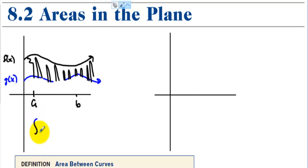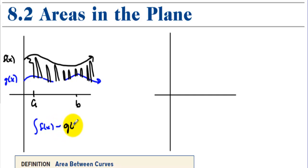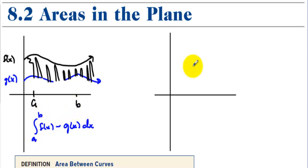That would be the integral of f minus the integral of g, dx, from a to b — and that gets the area in between the two curves.